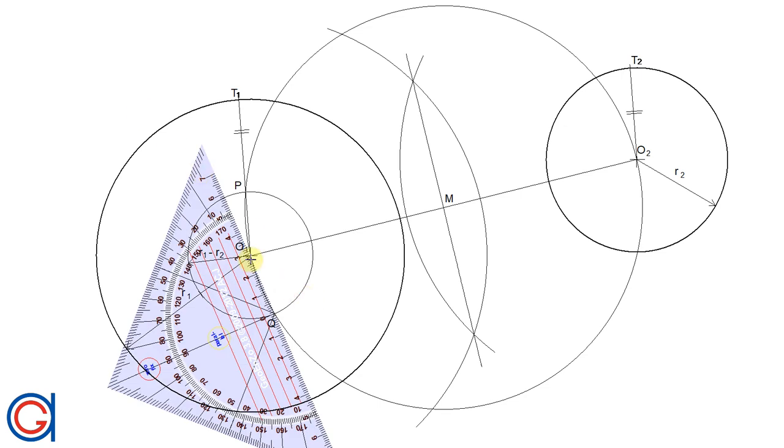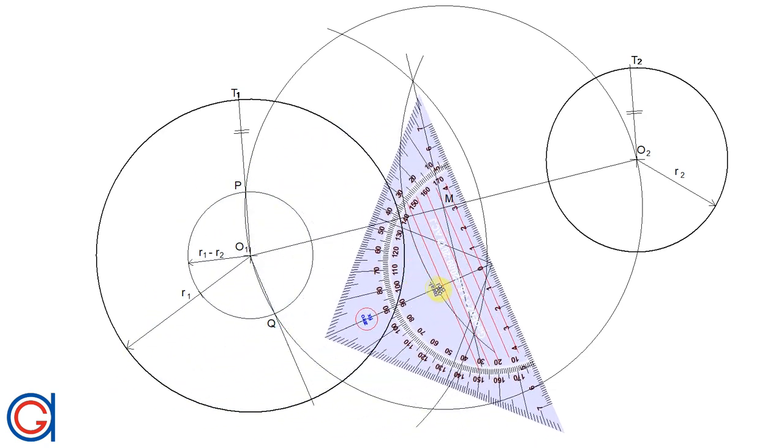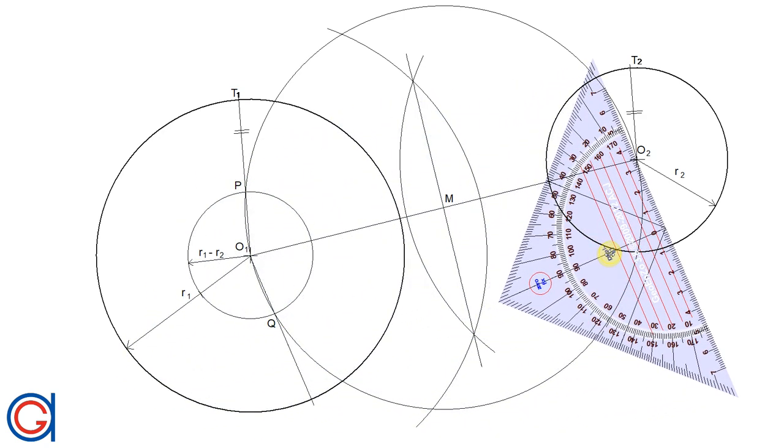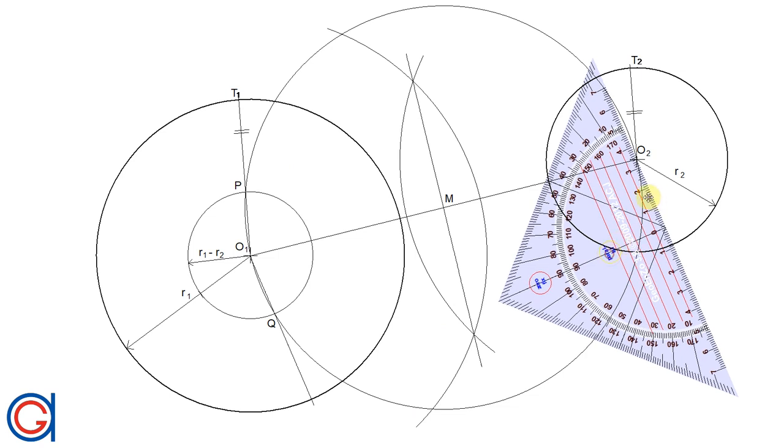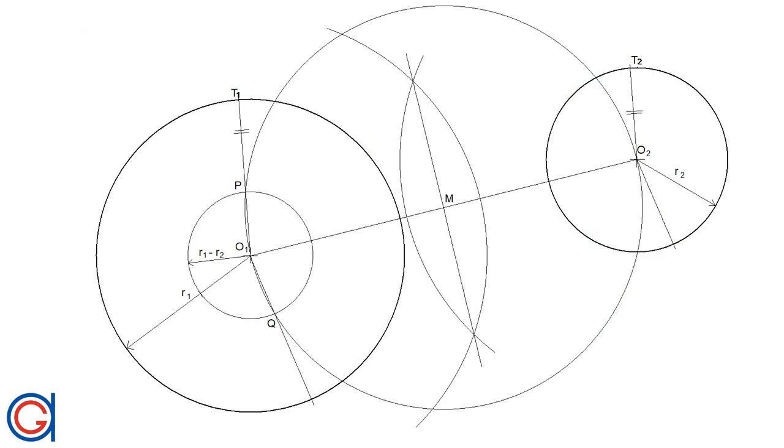We're going to repeat the process on the bottom sides of the circle, joining O1 through point Q until it touches the outer circle at our third tangent point T3. Again we will draw another parallel line from O2 until it touches the outer circle at our fourth tangent point T4.